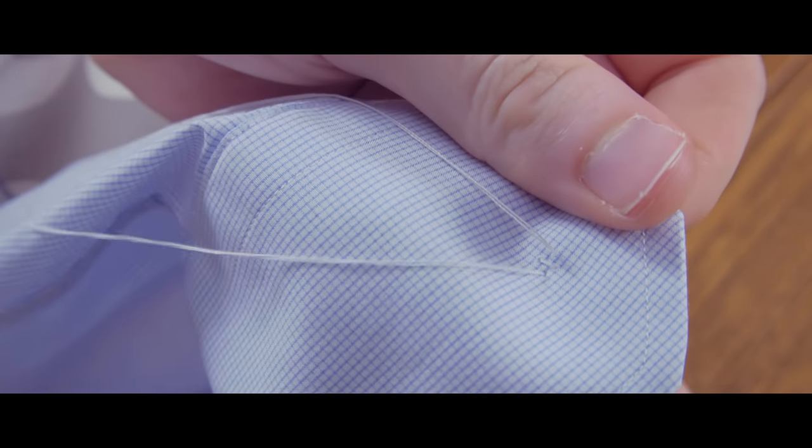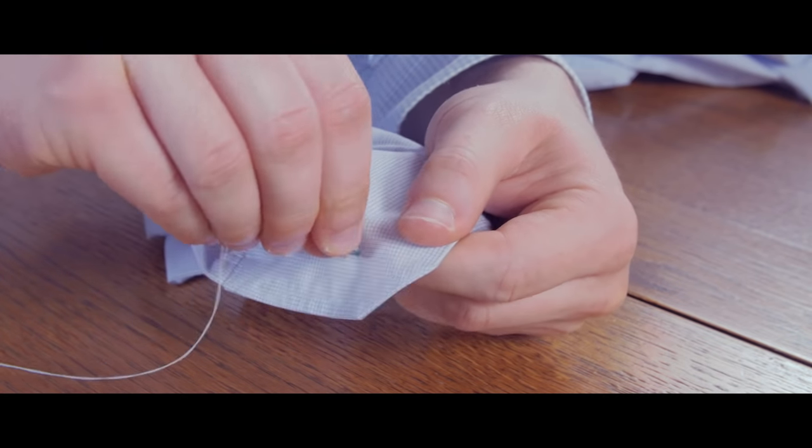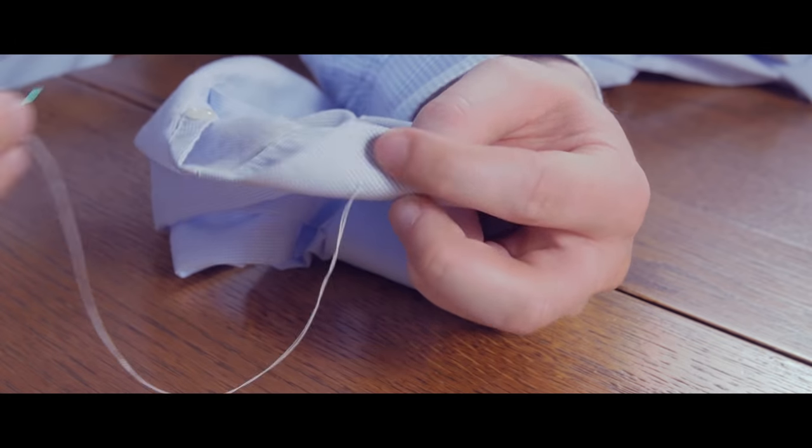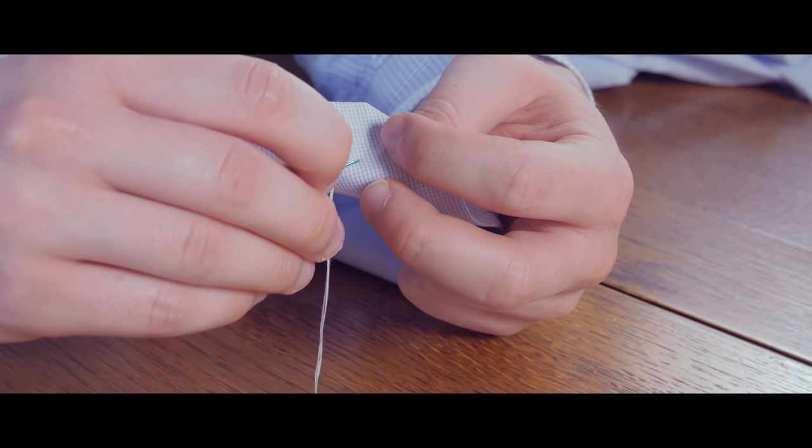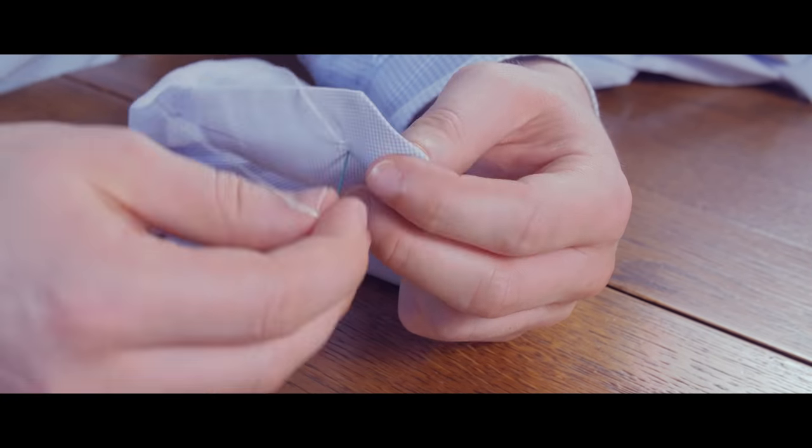Now it's time to start sewing. We're going to begin by forming an X. Starting on the back side, we're going to pass the needle through the back of the fabric to the front. You'll continue passing through the front to the back and back to the front until you've formed an X.